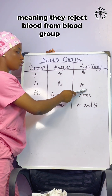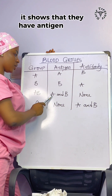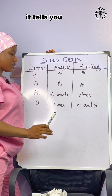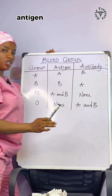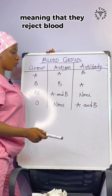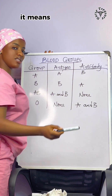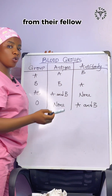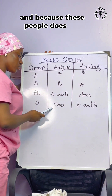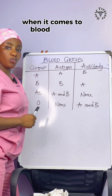People with blood group B have antigen B and antibody A, meaning they reject blood from blood group A. People with blood group AB have antigen A and B but have no antibody. People with blood group O don't have either A antigen or B antigen, but they have antibody A and antibody B, meaning they reject blood from blood group A and blood group B. So people with blood group O can only receive blood from fellow blood group O. And because they have no antigen, their blood can be donated to any other blood group.